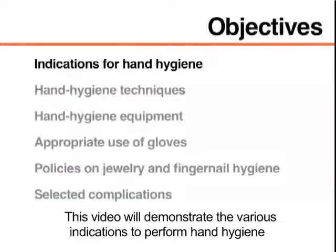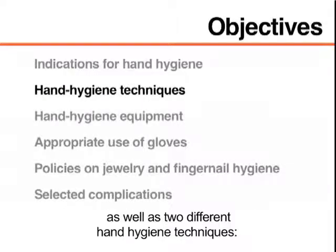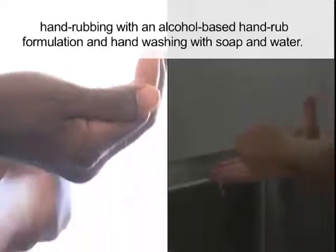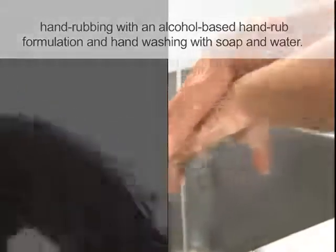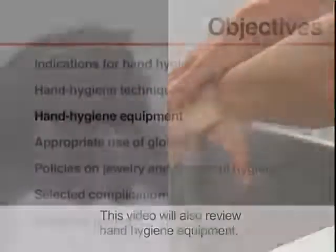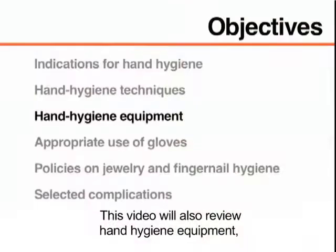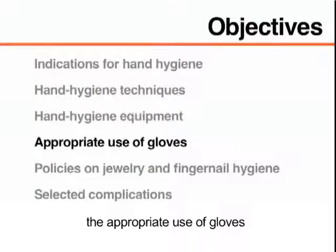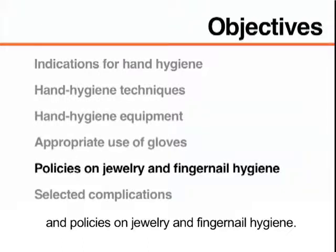This video will demonstrate the various indications to perform hand hygiene as well as two different hand hygiene techniques: hand rubbing with an alcohol-based hand rub formulation and hand washing with soap and water. This video will also review hand hygiene equipment, the appropriate use of gloves, and policies on jewelry and fingernail hygiene.